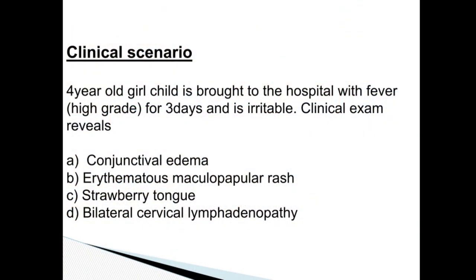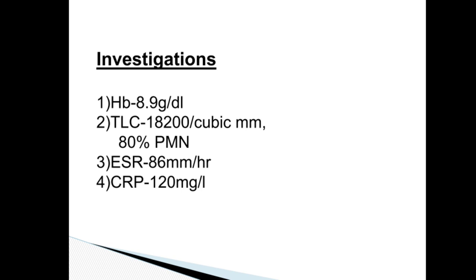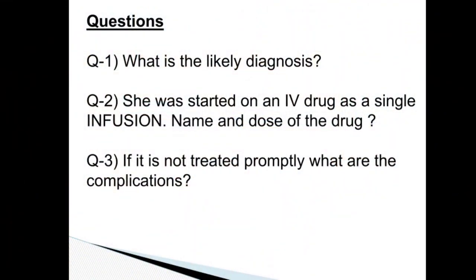Clinical scenario: a four-year-old girl is brought to hospital with high-grade fever of three days and is irritable. Clinical examination reveals conjunctival edema, erythematous maculopapular rash, strawberry tongue, and bilateral cervical lymphadenopathy. Investigations reveal Hb 8.9 g/dL, TLC 18,200, ESR 86, and CRP 120. What is the likely diagnosis? She was started on an IV drug as a single infusion — name and dose of the drug. If it is not treated promptly, what are the complications?